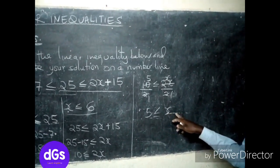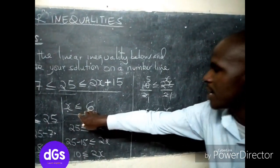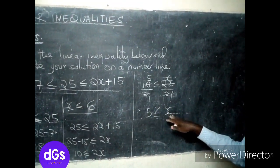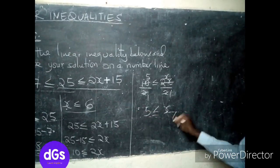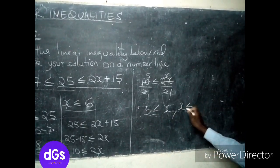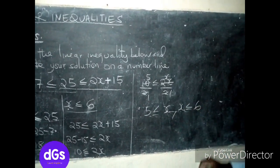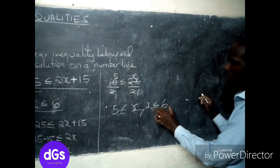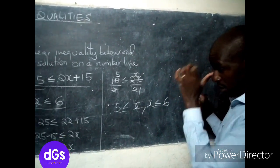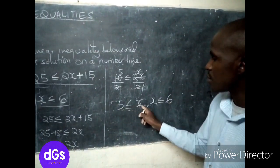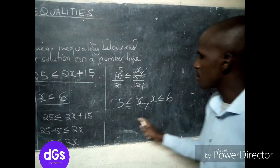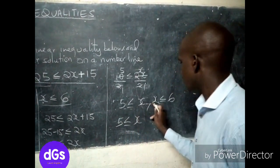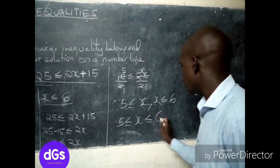We know that x is less than or equal to 6, and we have 5 less than or equal to x. We can now combine these two inequalities together. So: x is less than or equal to 6, and 5 is less than or equal to x. The final answer is 5 less than or equal to x less than or equal to 6.